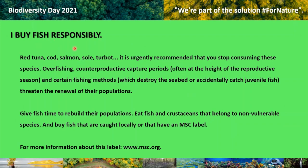Buy fish responsibly. Red tuna, cod, salmon, sole, and turbot — it is urgently recommended that you stop consuming these species. Overfishing, counterproductive capture methods and periods — often at the height of the reproductive season — and certain fishing methods which destroy the seabed or accidentally catch juvenile fish, threaten the renewal of their populations. Give fish time to rebuild their populations. Eat fish and crustaceans that belong to non-vulnerable species, and buy fish that are caught locally or that have an MSC label.